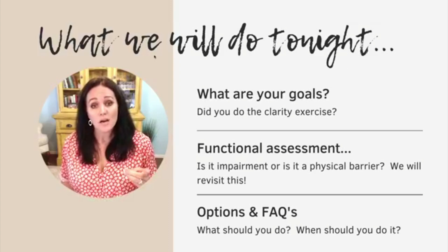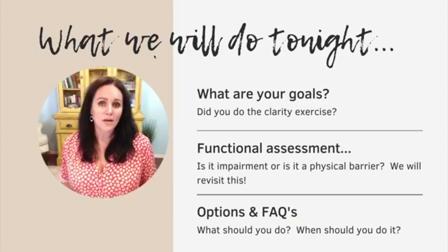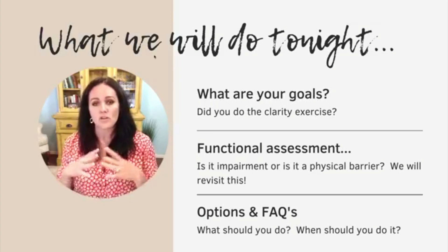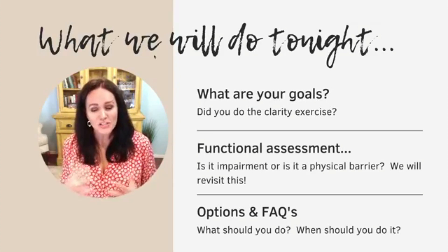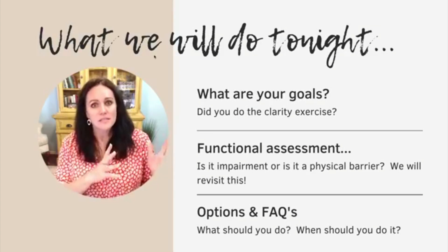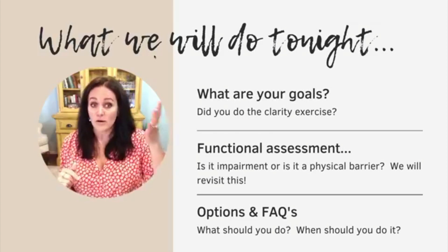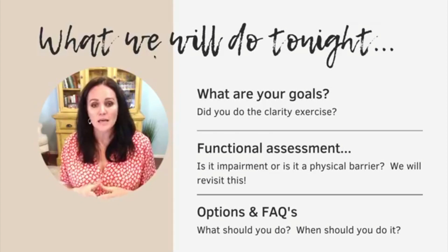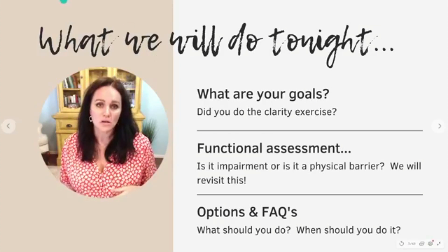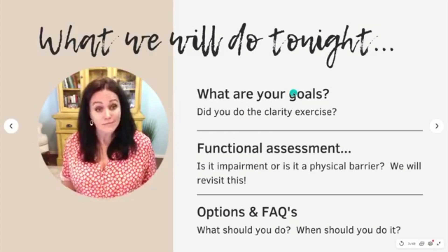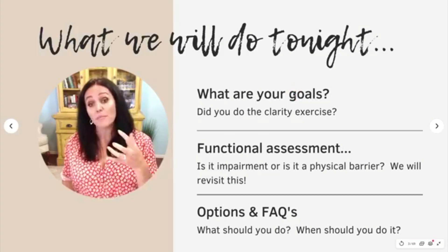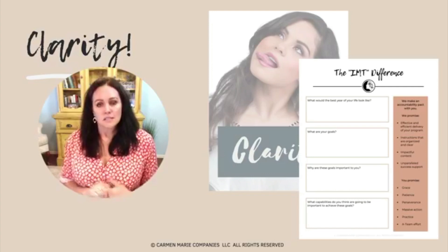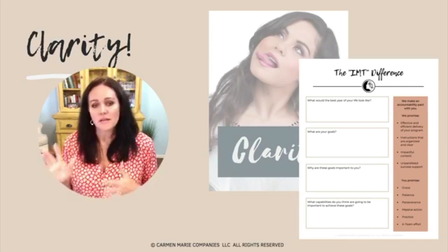Tonight in lesson three we're moving on to the commit part. We're going to talk about your goals, revisit the functional assessment, and try to refresh your memory on whether it's impairment or a physical barrier — meaning, do you just have functional impairment, or do you have a tongue tie? We'll also talk about options and look at frequent questions I've been compiling from you all week.